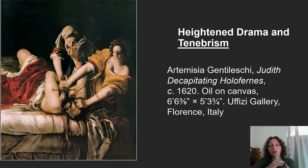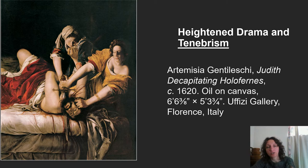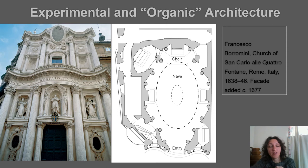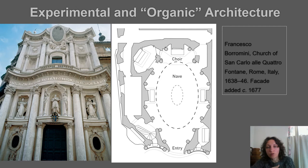Baroque definitely has that heightened drama, and then there's this term called tenebrism — that's that super extreme chiaroscuro. There's a dramatic light source, almost like a staged light source coming from the bottom of the picture up. It's very dramatic, very dark gloomy backgrounds with that high and low intensity light. Then there's experimentation with organic architecture — this is an Italian Baroque building that will be very influential to the later northern Baroque.